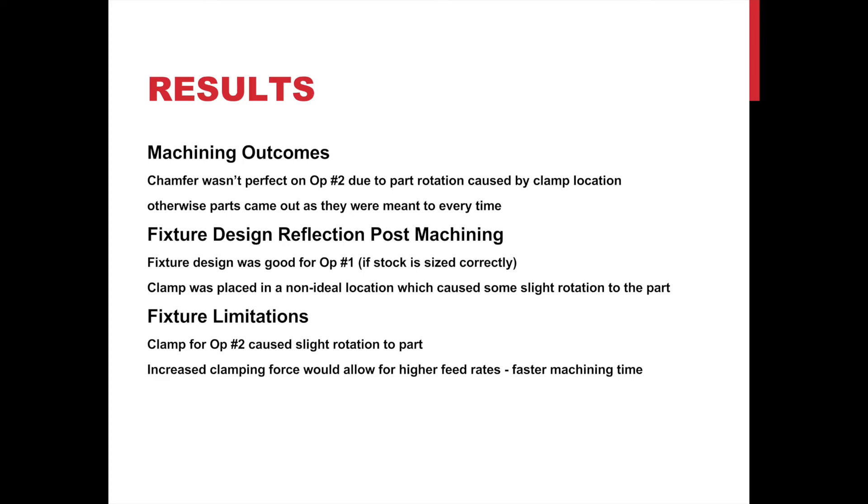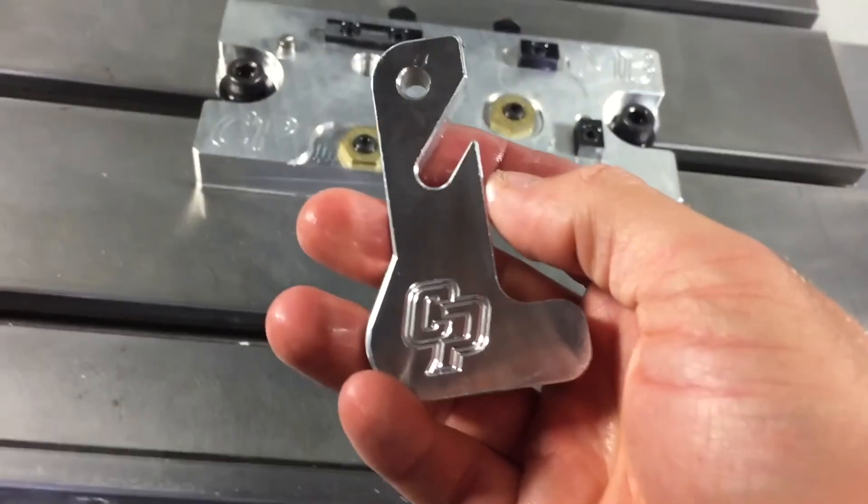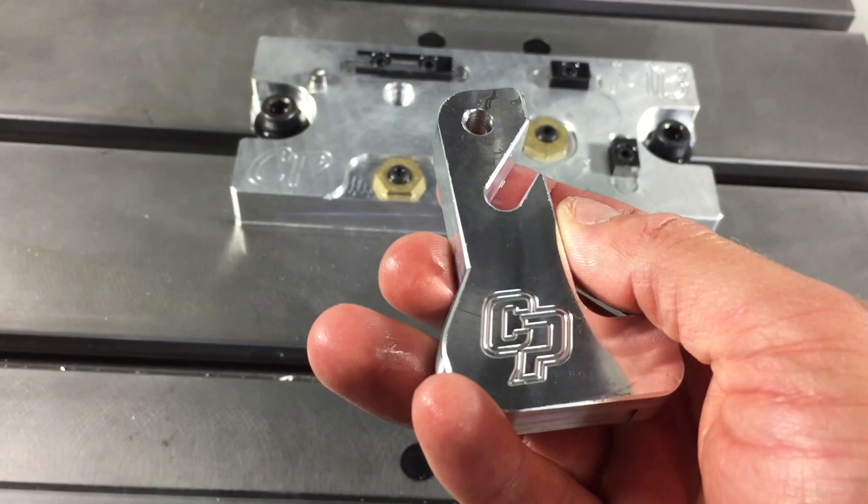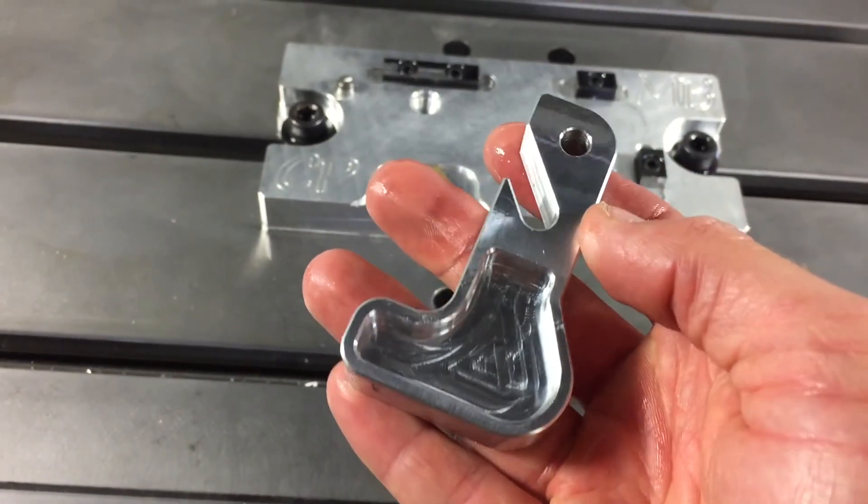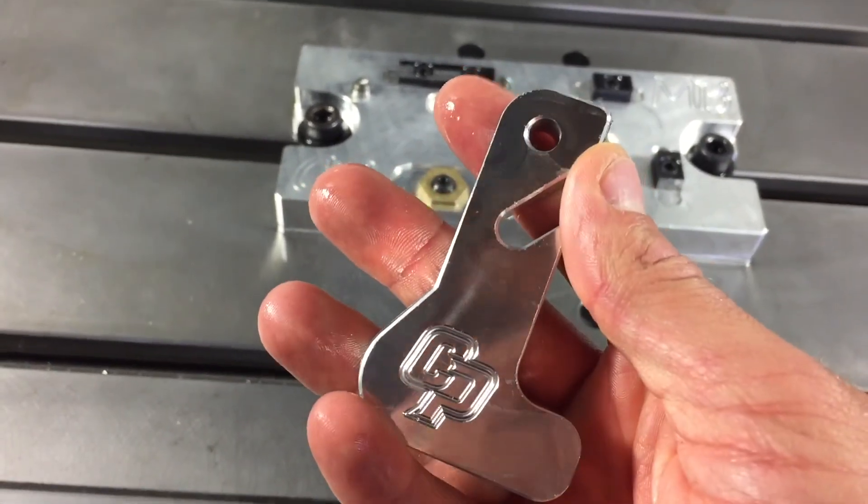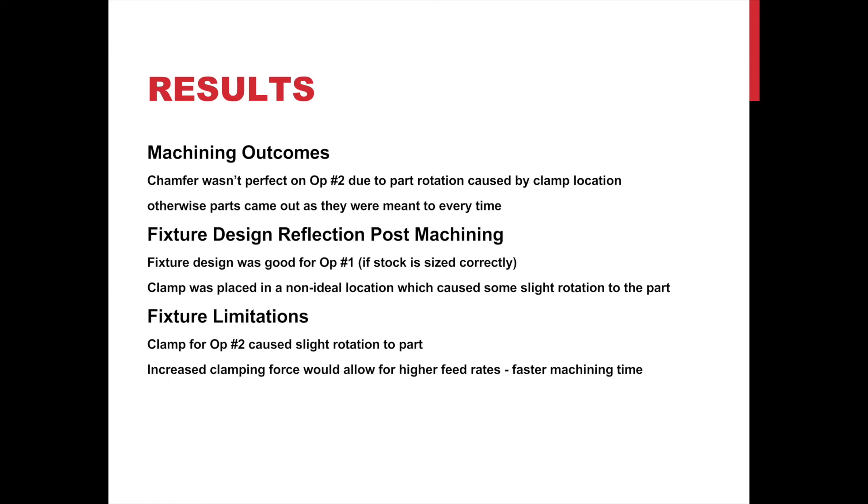The results from fixture testing were that the chamfer was not perfect on operation 2 due to part rotation caused by the clamp location on the fixture plate. Other than that, the parts came out as they were meant to be every time. Reflecting on the fixture design post-machining, the team decided that the fixture design was good for Operation 1, assuming the stock was correctly sized. But the clamp was placed in a non-ideal location in Operation 2, which caused some slight rotation of the part. Some limitations of the fixture were derived from that clamp location in Operation 2. Also, increased clamping force would be nice in order to run higher feed rates and lower our machining time.